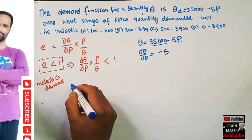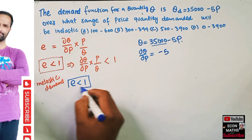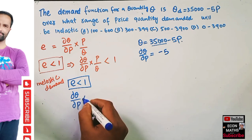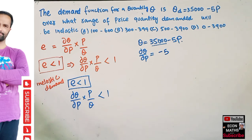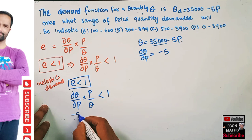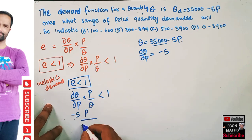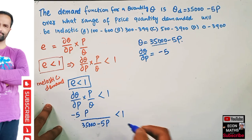We need this equation to hold: elasticity of demand should be less than 1, meaning dQ/dP multiplied by P upon Q should be less than 1. Here dQ/dP is minus 5, P stays as P, and Q equals 35,000 minus 5P. So we have: minus 5 times P upon (35,000 minus 5P) should be less than 1.